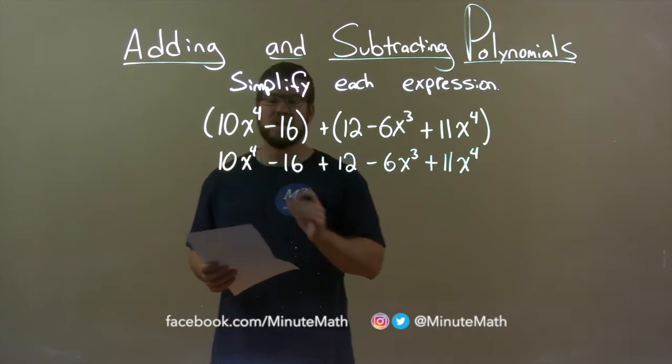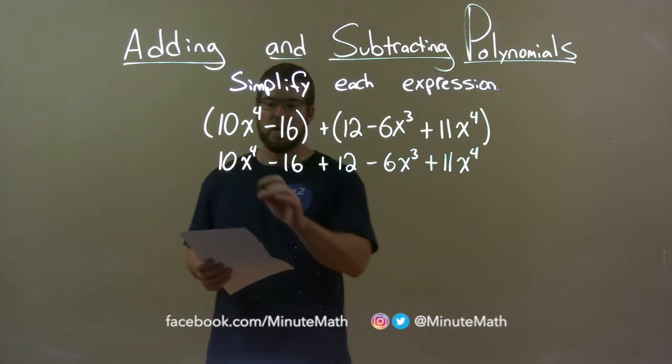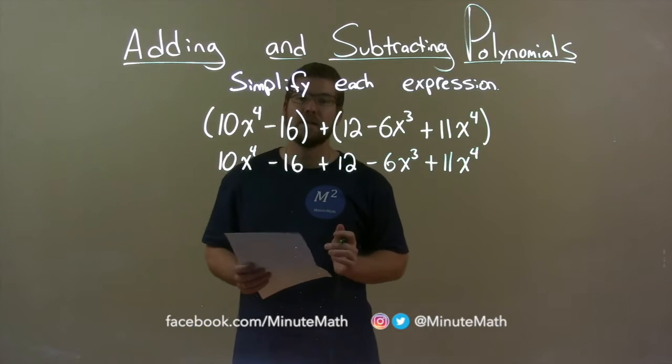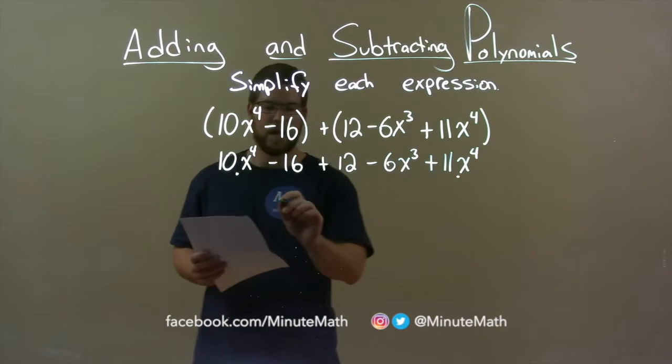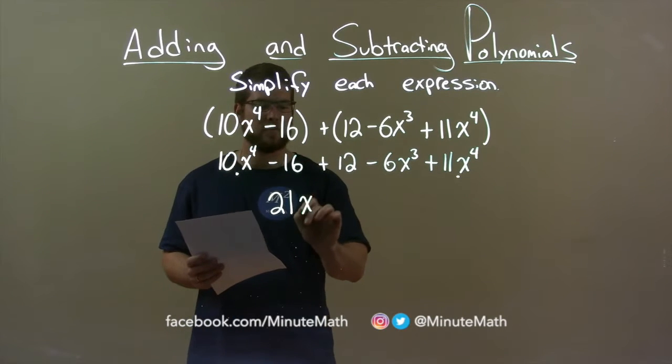My highest degree that I see here is to the 4th power. So we have a 10x to the 4th and 11x to the 4th. Combine the two and we have a 21x to the 4th.